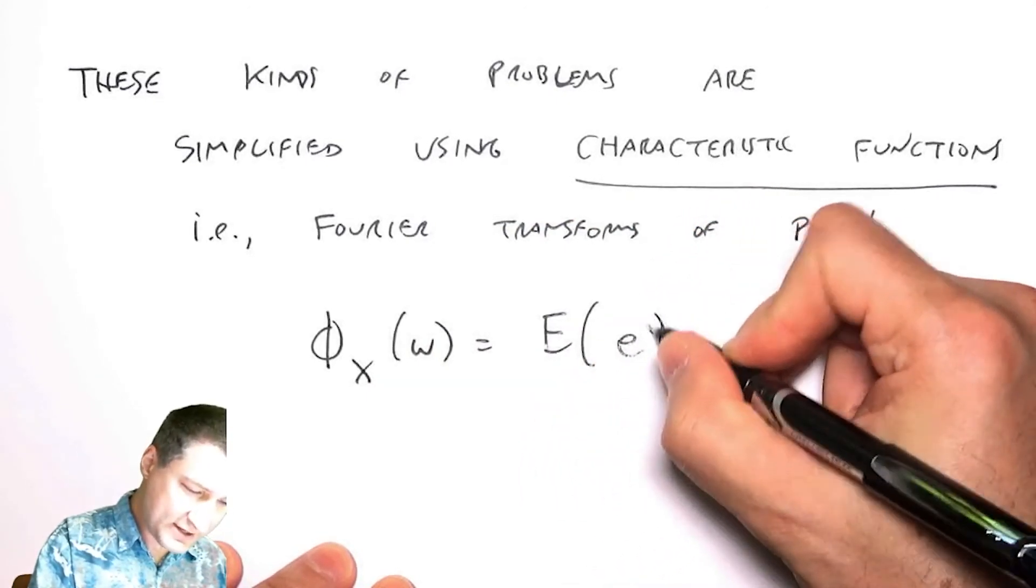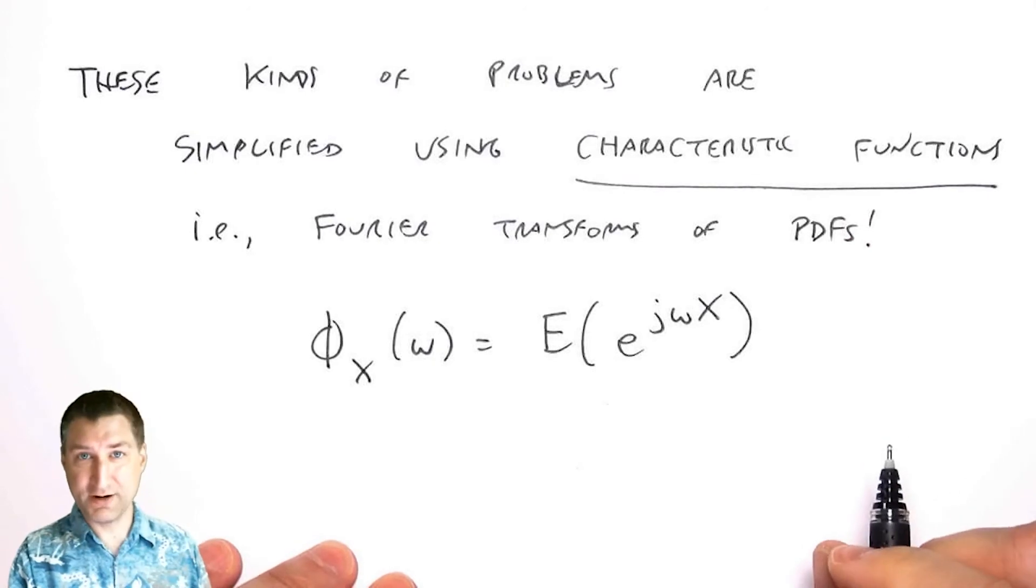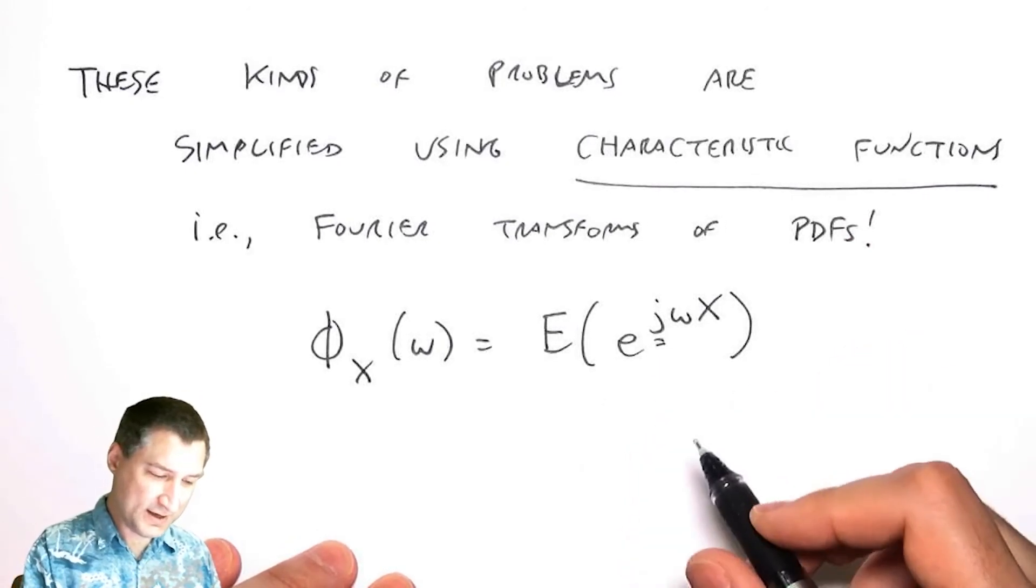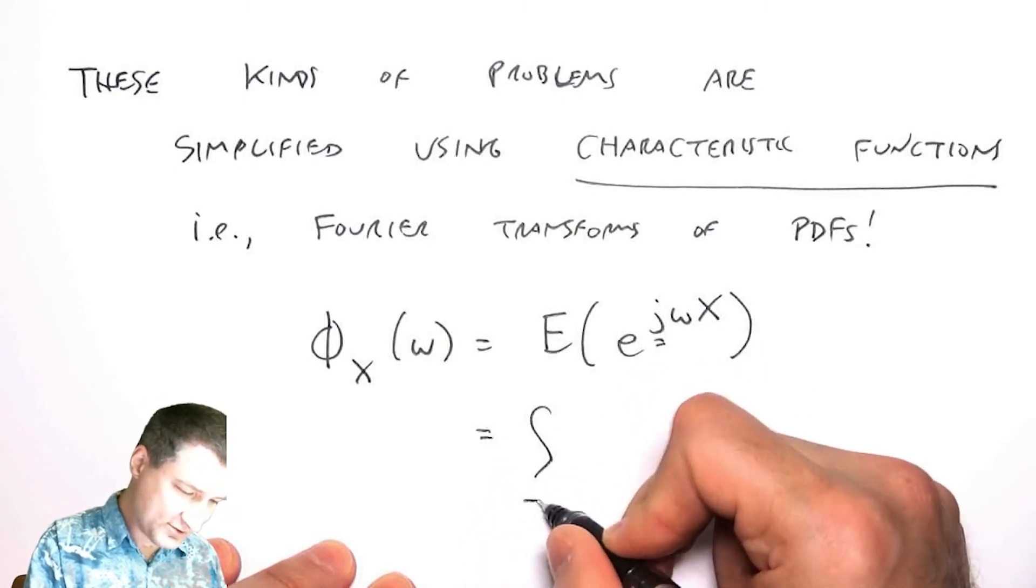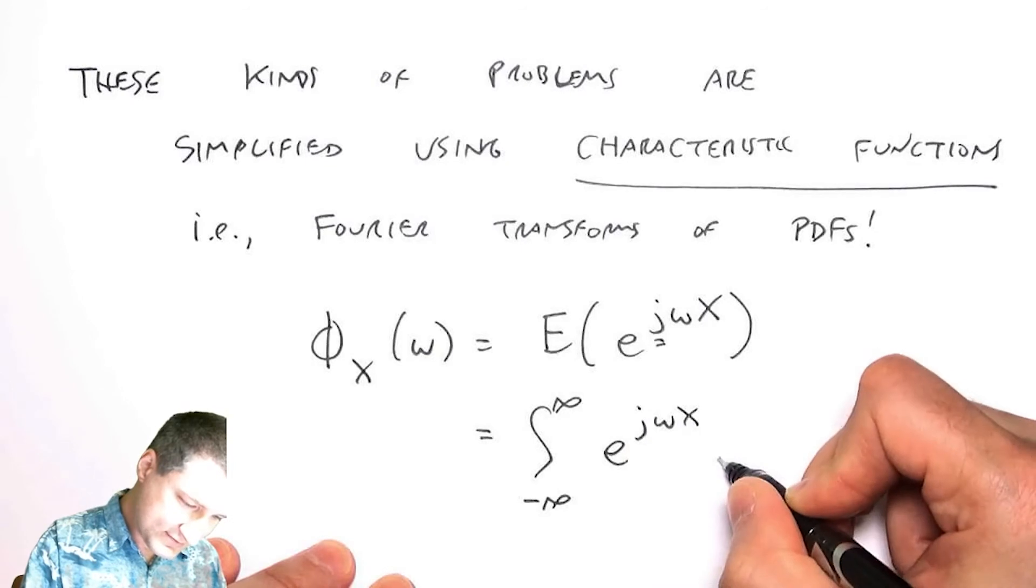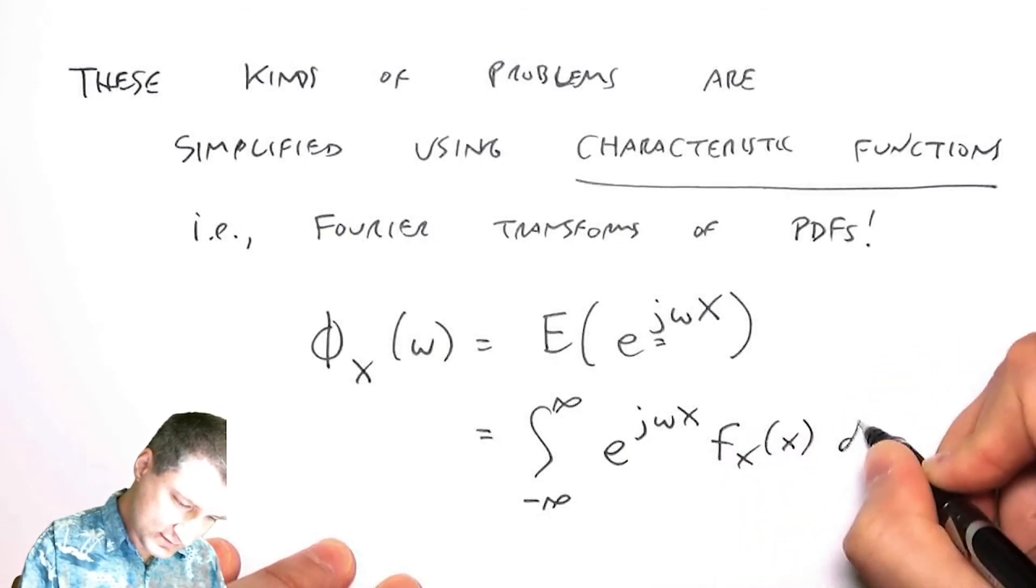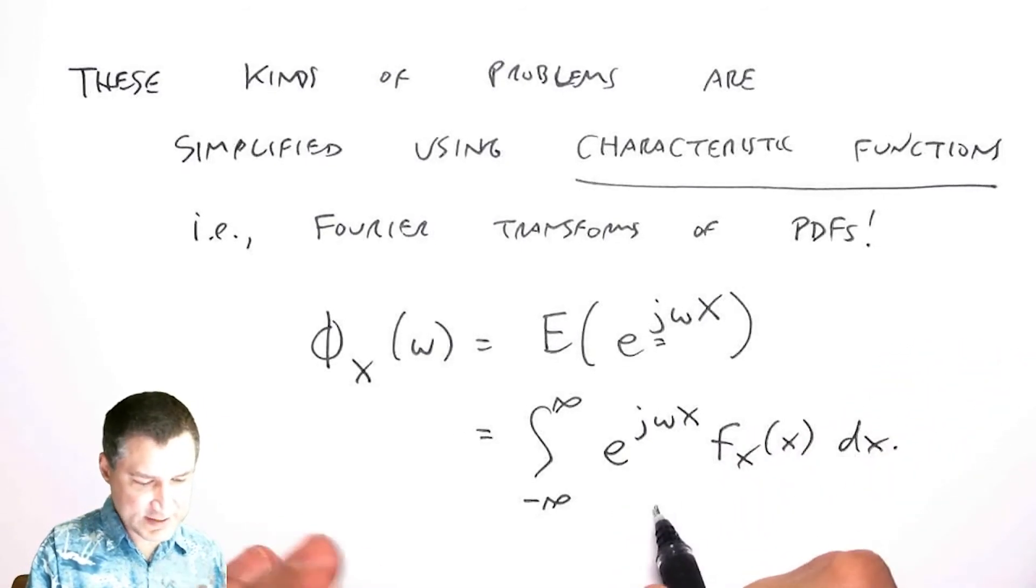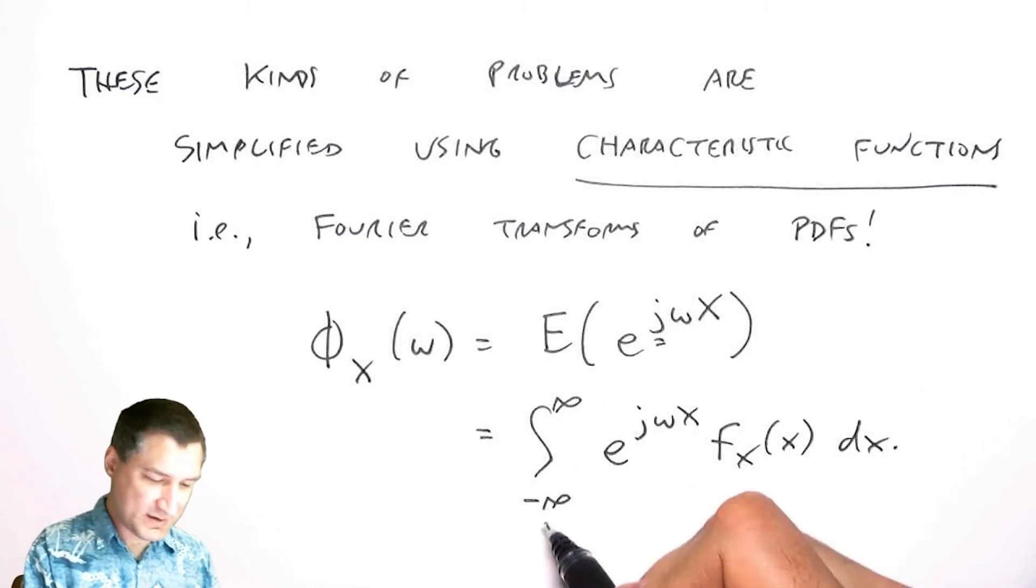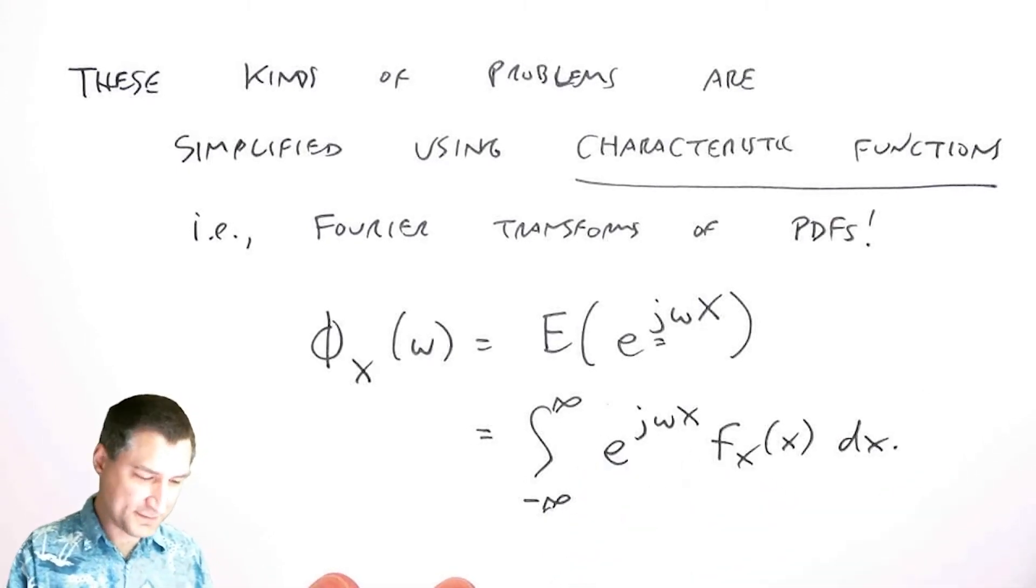As the expected value of this function of a random variable, where j is the imaginary square root of minus one. So this is like an integral that looks like this: e to the j omega x dx. And if you know Fourier transforms, you see this is kind of what we define the Fourier transform to be.